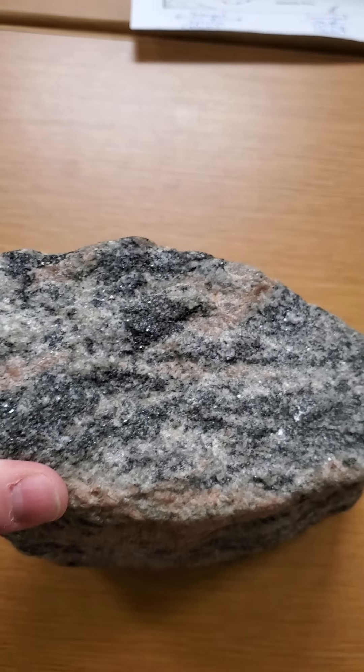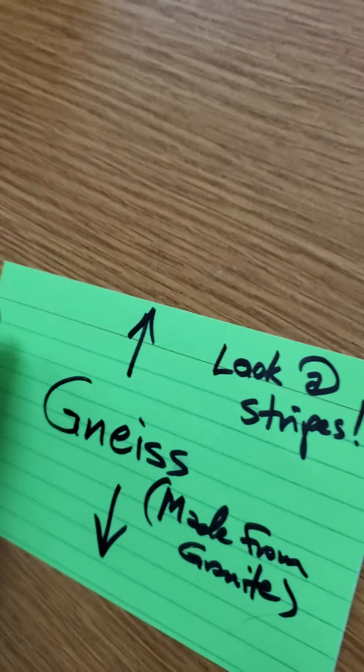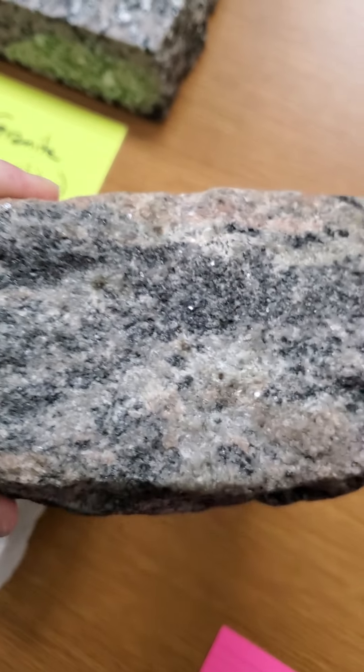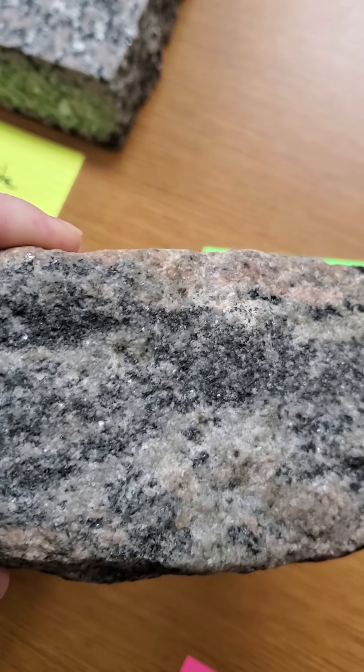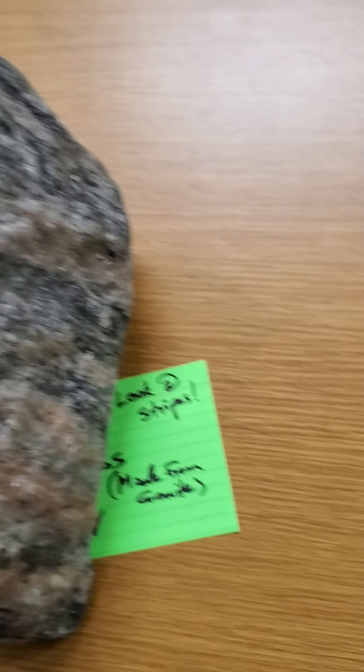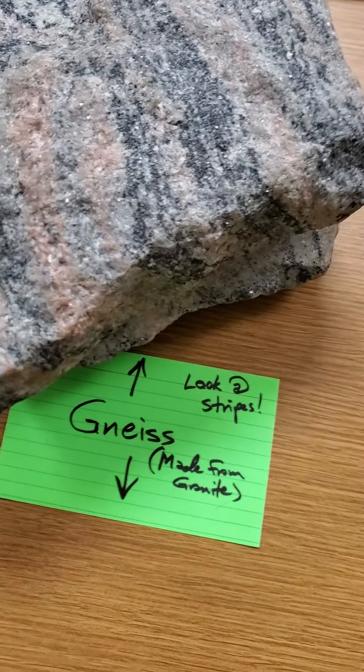On this side, you can see the little stripes. Depending on which side, which angle you look at it, sometimes you wouldn't see this. Like here, you look at the same chunk. If you look from this angle, you can't really tell it's that stripey. There's that. Now, come back over here.